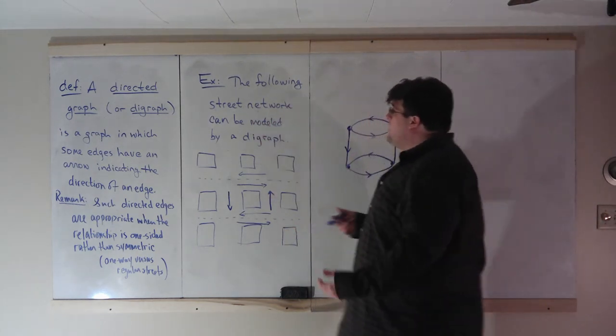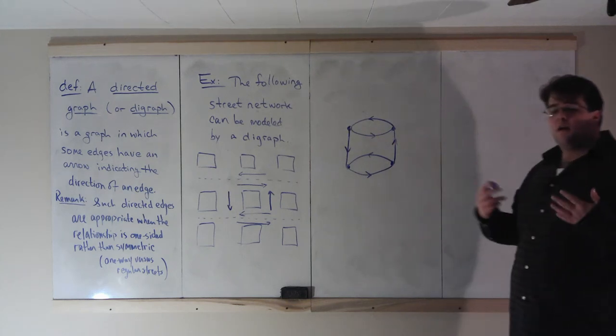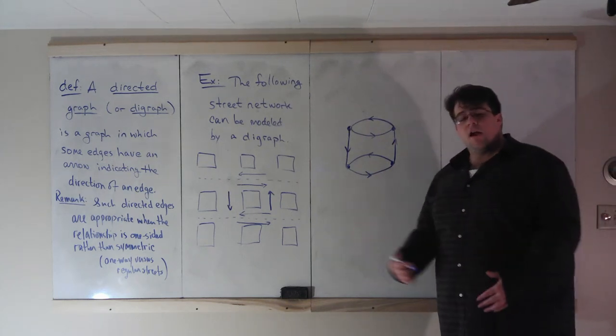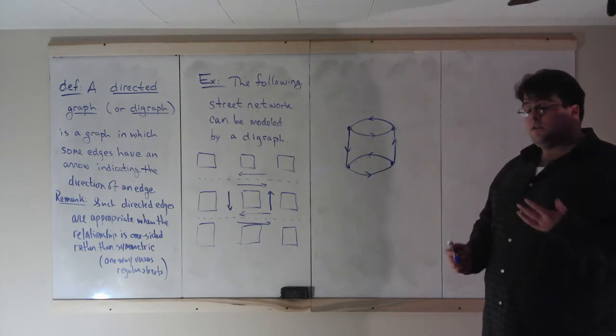It's going to be, it's one like this where it's, here's a street network, construct a digraph, and then find an Euler circuit in it.